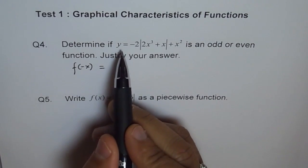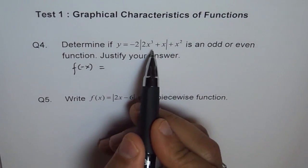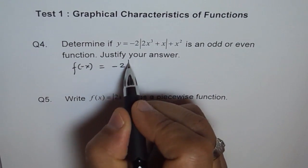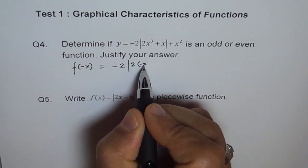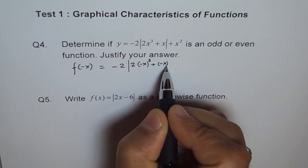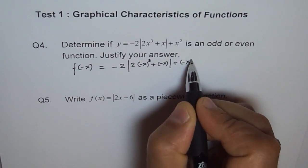So f(x) is given to us. f(-x) means we will replace x with minus x, right? So we will have -2 times the absolute value of (-x)³ + (-x) + (-x)², right?